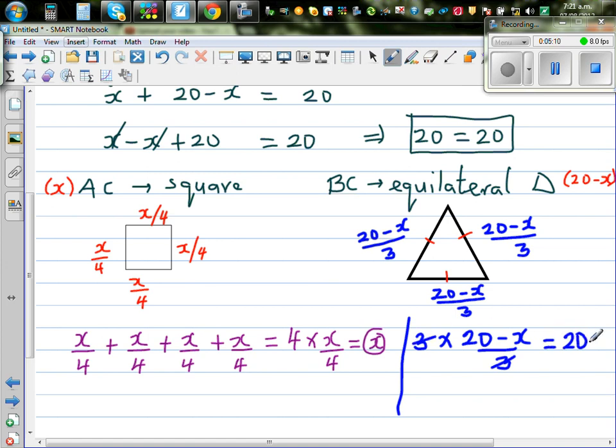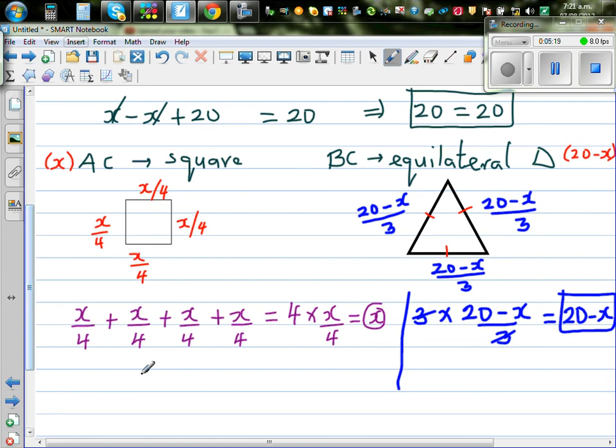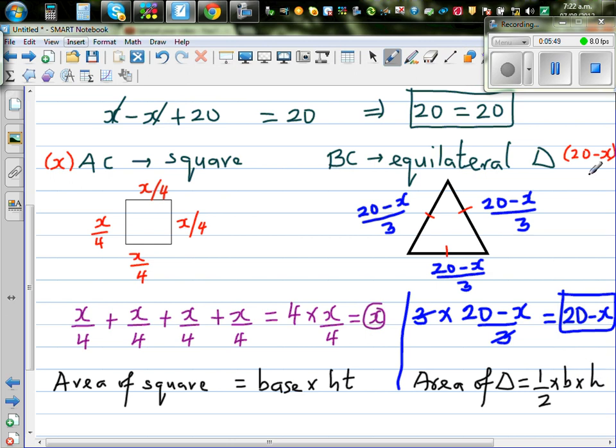So now this is a challenge that I give to you. Take this as a challenge. Can you write the area of the square? Let me give you the formula. Area of the square is base times height. So area of square is equal to base times height. And area of a triangle is half base times height. Area of triangle is half, b for base, times h for height.